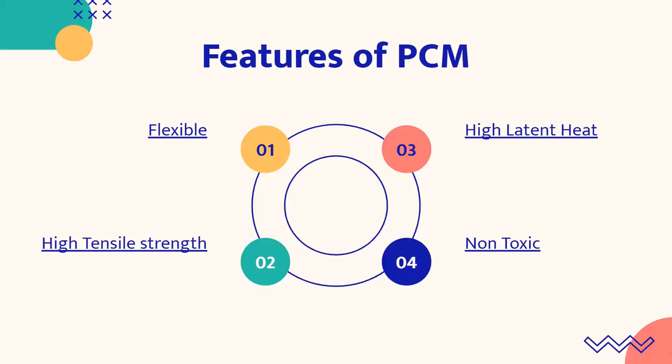So now what are the features of PCM? Why have we used PCM only? It is non-toxic. It doesn't harm the environment while forming. Thirdly, it has high latent heat. So how does this factor affect us?